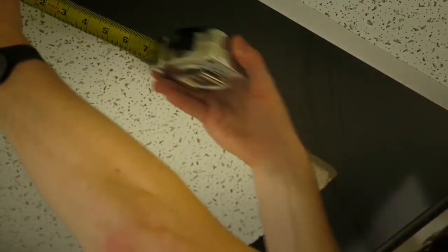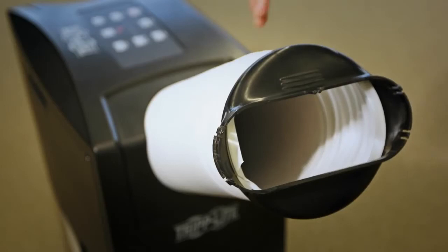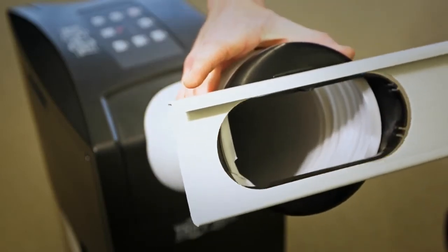To begin the exhaust installation, measure the drop ceiling tile width and adjust the included exhaust panel to the same width. Then, snap the exhaust adapter into the panel to attach.